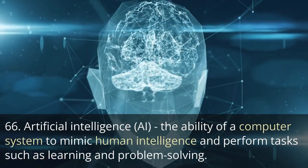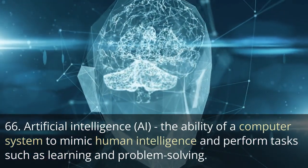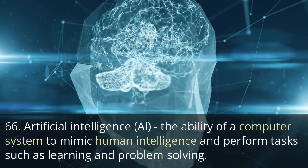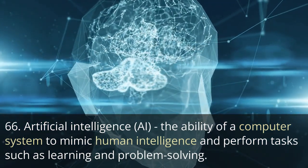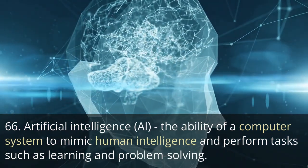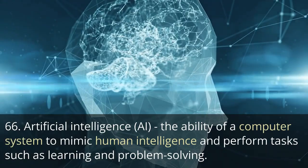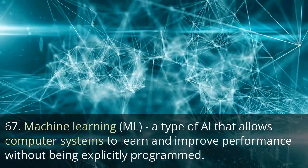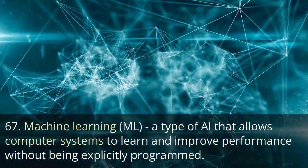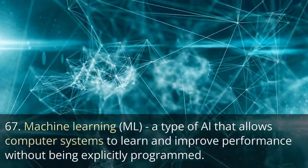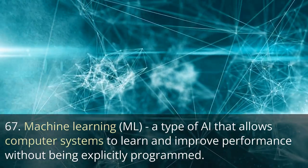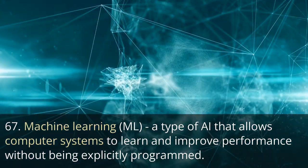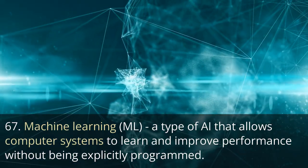Artificial intelligence (AI), the ability of a computer system to mimic human intelligence and perform tasks such as learning and problem solving. Machine learning (ML), a type of AI that allows computer systems to learn and improve performance without being explicitly programmed.